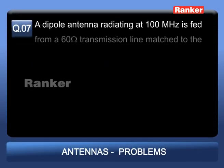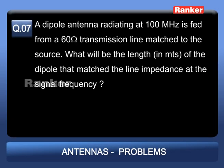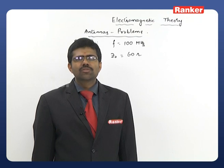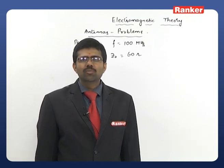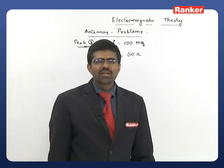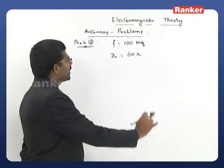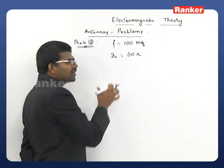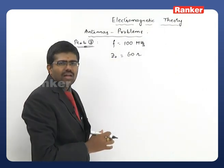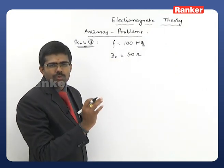Problem 7: A dipole antenna radiating at 100 MHz is fed from a 60-ohm transmission line matched to the source. What will be the length in meters of the dipole that matches the line impedance at the signal frequency?